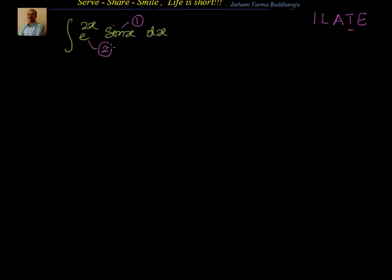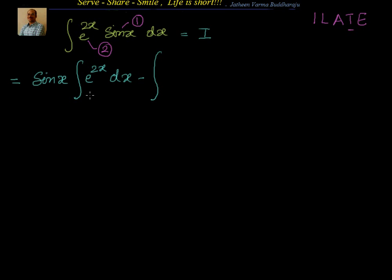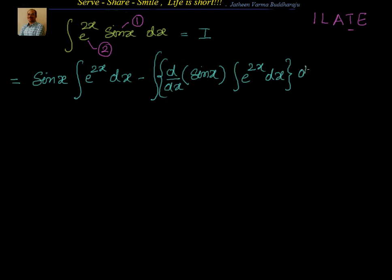So sin x is the first function and e power 2x is the second function. If you remember the formula, let's write it down. Let us say this is equal to i. Also, if you observe, both these functions we can do integral and both these functions we can do differentiation. So anything can be taken. Let's write the first step: i equal to first function stays as it is — sin x — multiplied with the integral of the second function, e power 2x dx, minus then the integral of the derivative of the first function, d by dx of sin x, multiplied with the integral of the second function e power 2x dx.